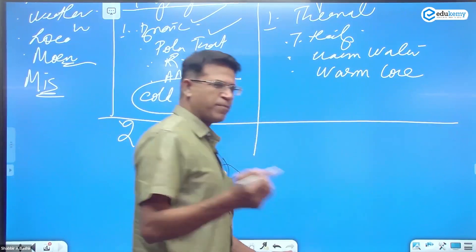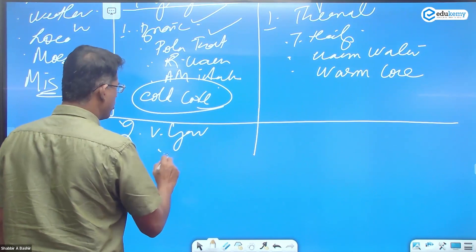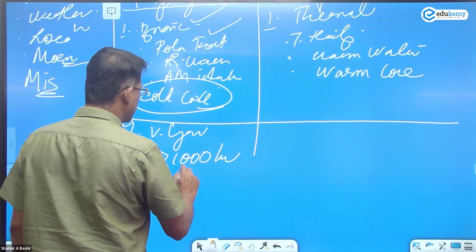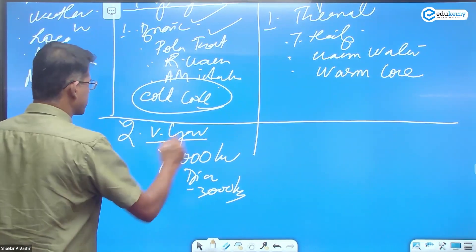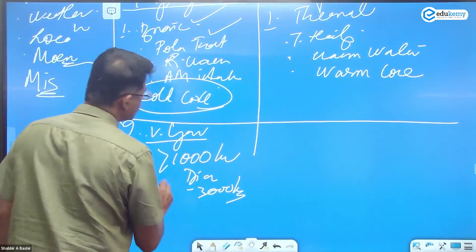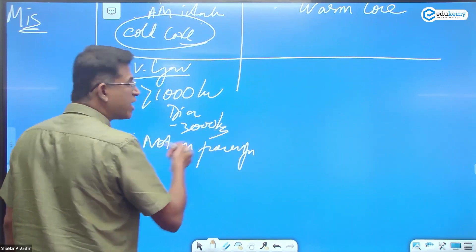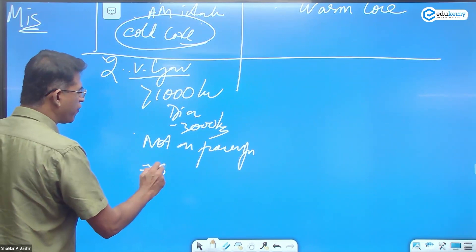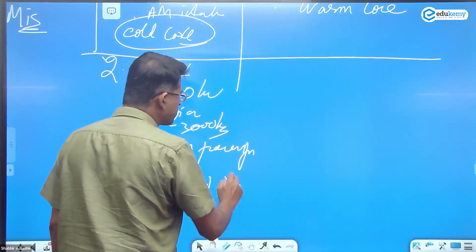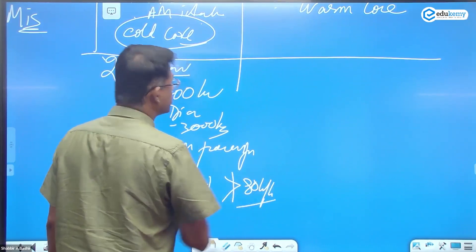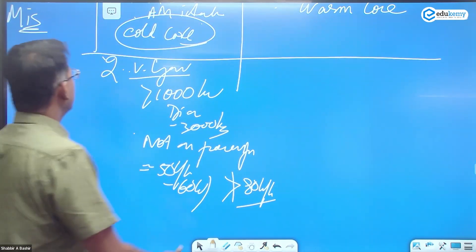In terms of size, temperate cyclones are very large — more than 1000 kilometers in diameter, and can reach almost 3000 kilometers in diameter. They are very large systems but not as powerful. Generally, wind speeds are about 50 to 60 kilometers per hour, and in any case not more than 80 kilometers per hour. These are large frontal systems.